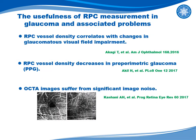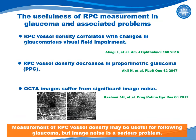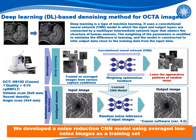It has been reported that RPC density measured with OCTA correlated with glaucomatous visual field impairment, and RPC vessel density decreased in preperimetric glaucoma. However, significant image noise may be introduced to OCTA images due to various factors. Therefore, even though measuring RPC vessel density may be useful for following glaucoma, image noise may interfere with accurate evaluation of RPCs.